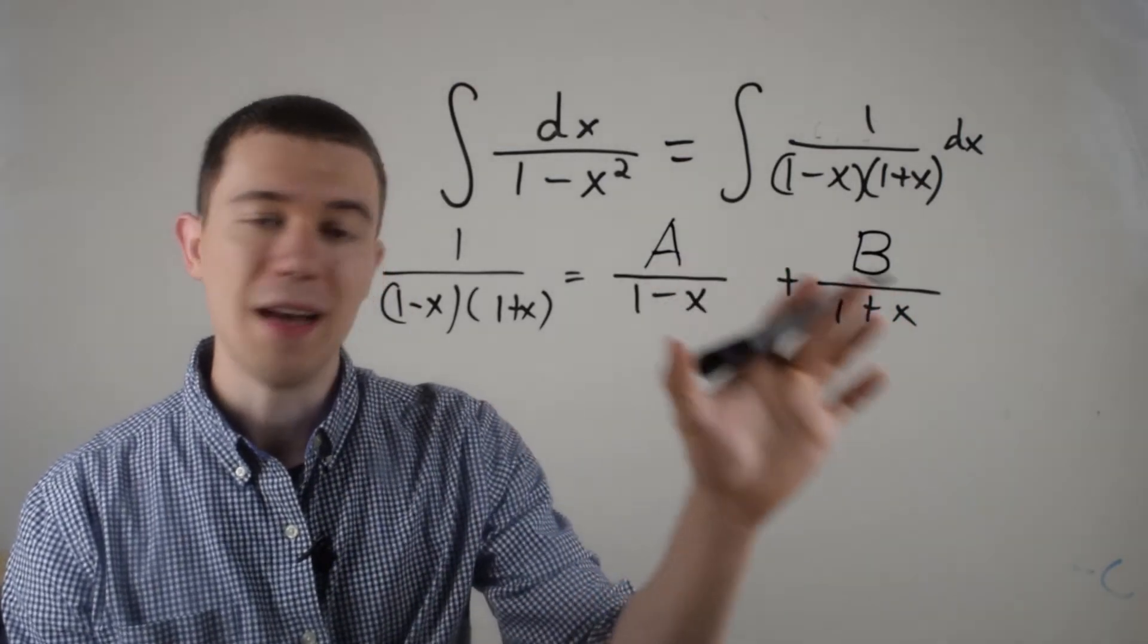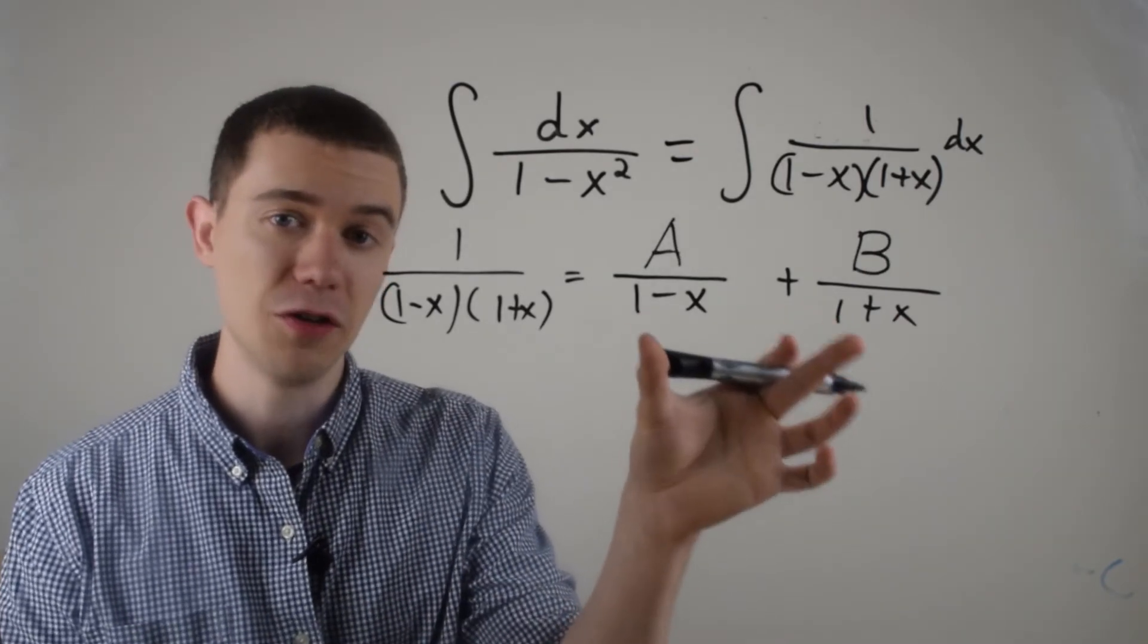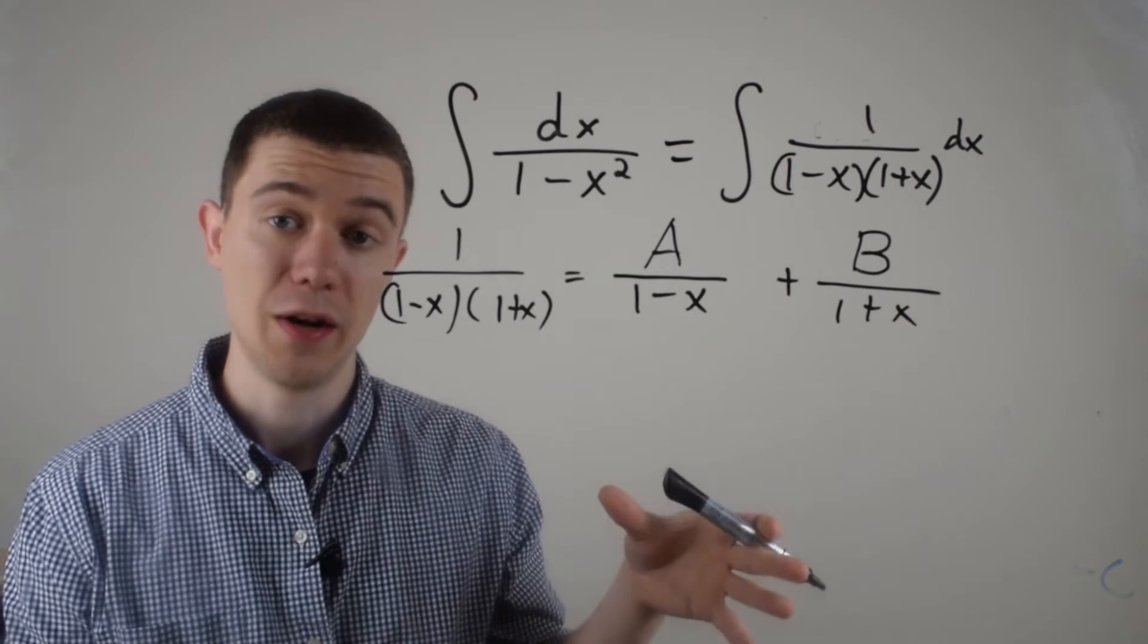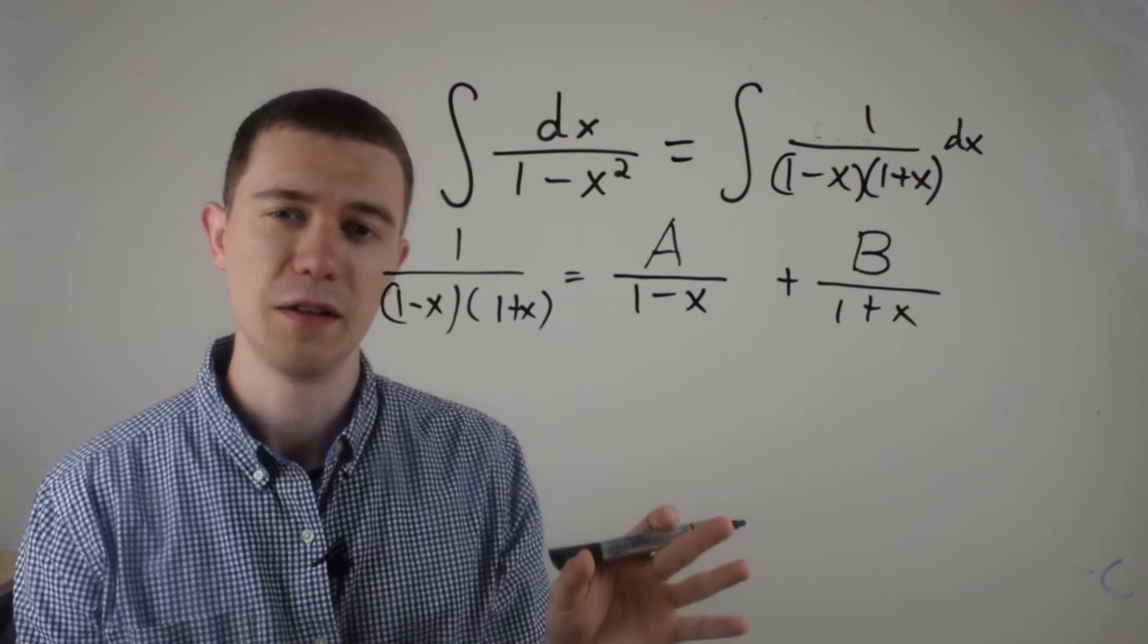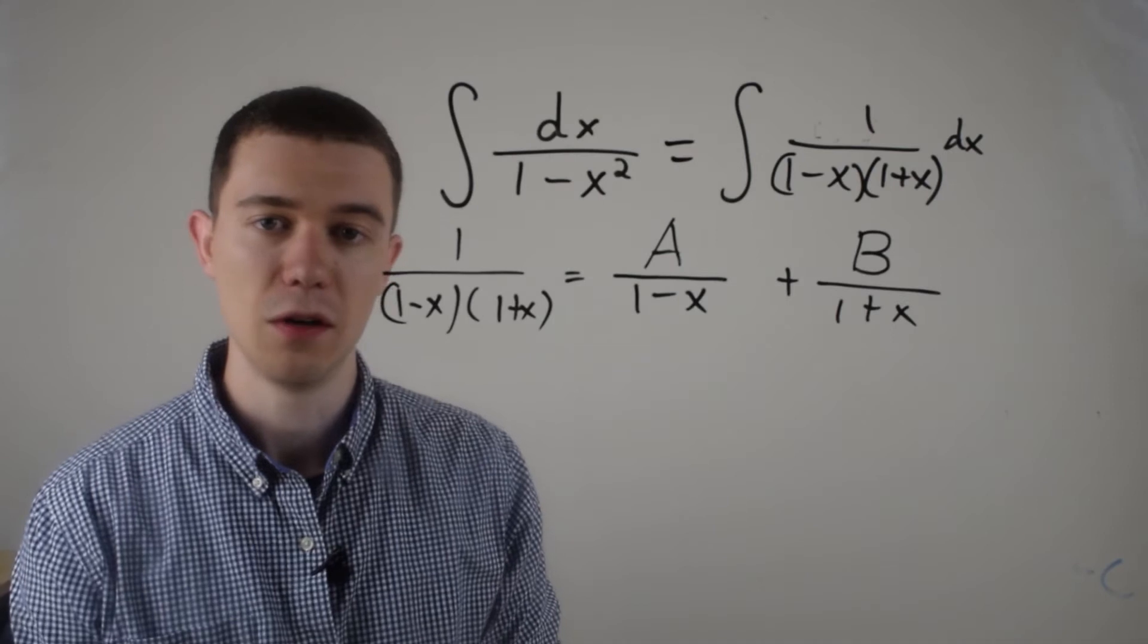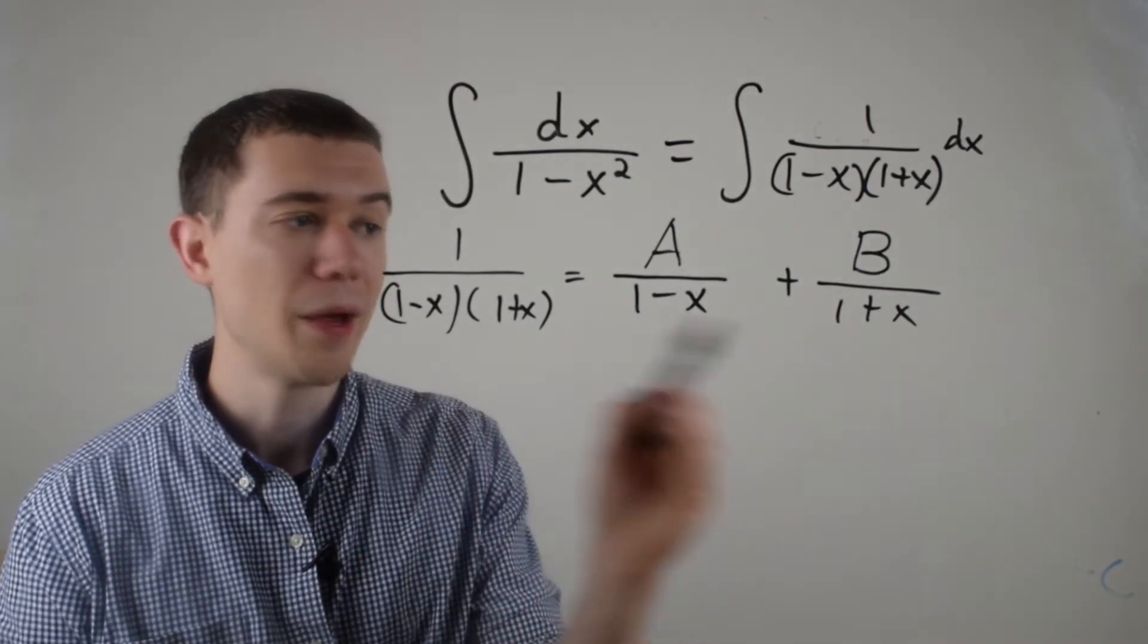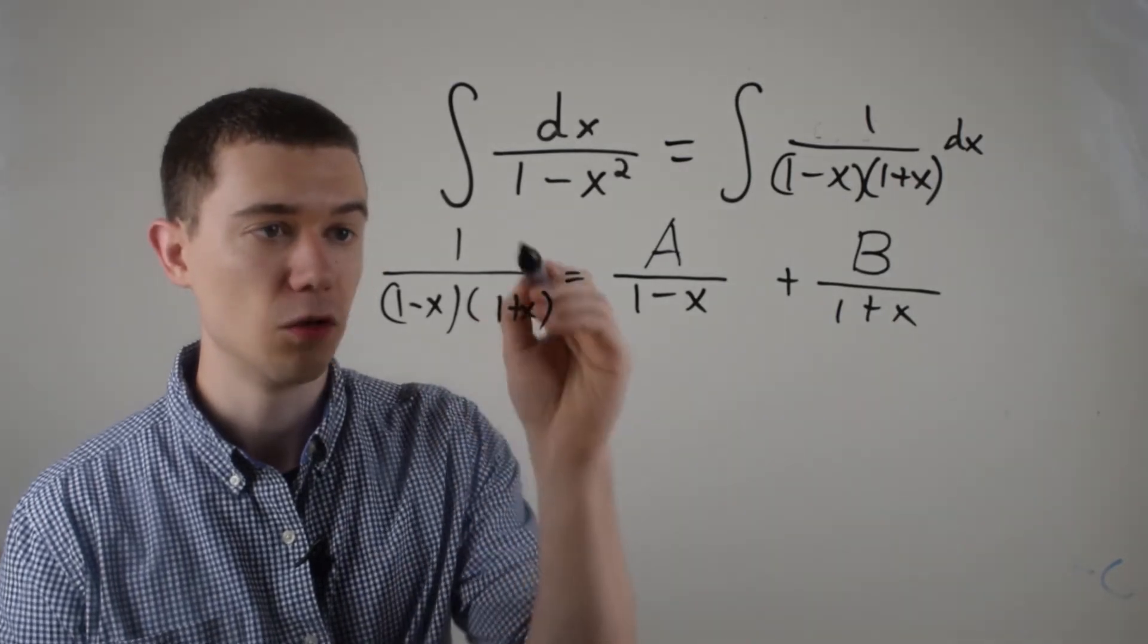And the reason it's just A and B, maybe you've seen a more complicated example. Since these are both linear factors in the denominator, I have just constants in the numerator. And now what I'm going to do in the next step to solve for A and B, the first thing you do, and some teachers tend to gloss over this and tend to confuse some students, is you multiply both sides by the entire denominator on the left here.